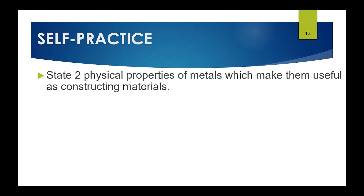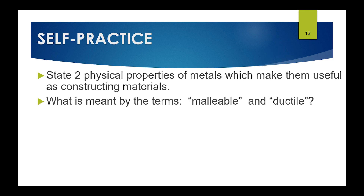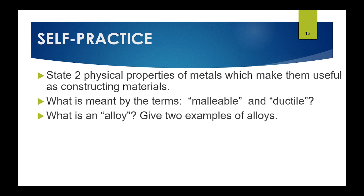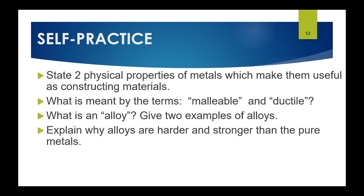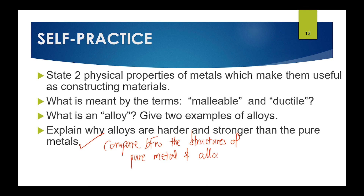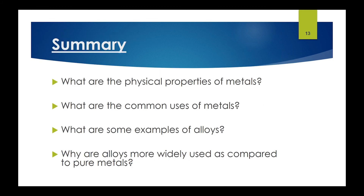Let's consolidate with some self-practice questions to think about before going through with your teacher in class: What are two physical properties of metals that make them useful as construction materials? What is meant by the terms malleable and ductile? What is an alloy — give two examples. Explain why alloys are harder and stronger than pure metals. When answering, compare the structures of the pure metal and the alloy, referring to atomic arrangement and atom sizes.